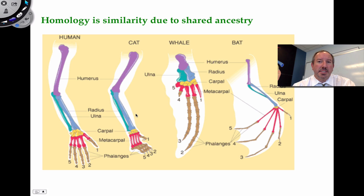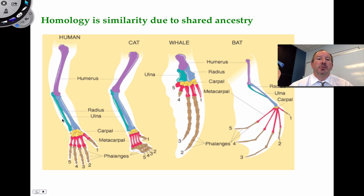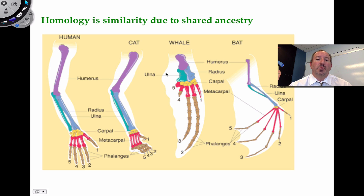Homologous structures mean that seemingly different organisms — human, cat, whale, bat — if you look at the anatomy, if you look at the humerus and the radius and ulna, these are similar because of common shared ancestry. This is evidence that these organisms have descended from a common ancestor. Even a marine mammal like the whale, whose fin doesn't serve the same purpose as a human arm, still possesses homologous structures inside the fin, suggesting an ancestral relationship and a common ancestor between the human and the whale.